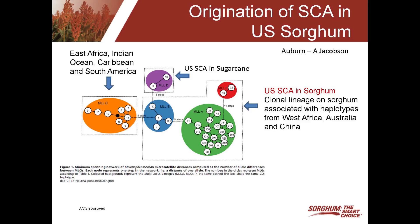The biotype that we're seeing in our sorghum is actually the same biotype that we see in West Africa, Australia, and China. So how it actually got here we're unsure, but that's what it's related to — those aphids in those countries.